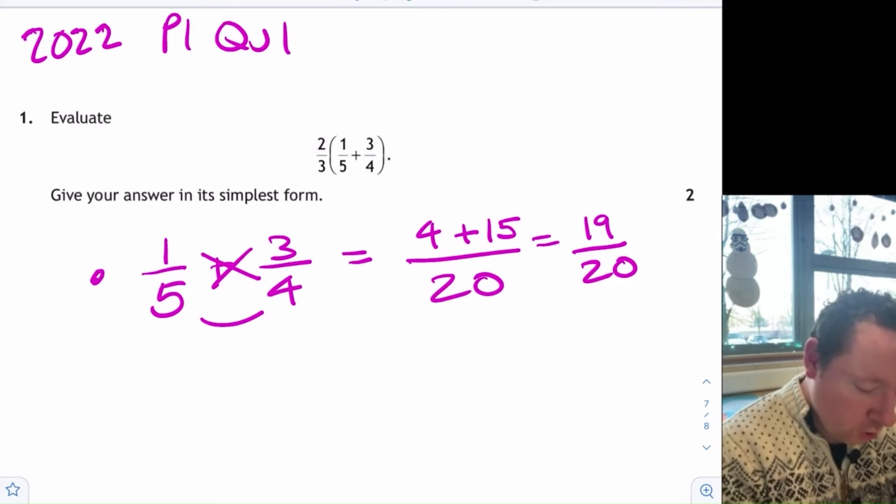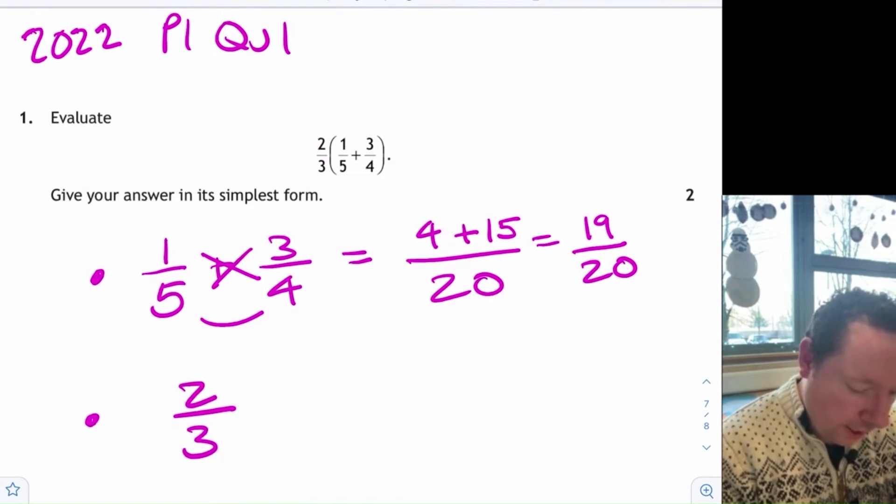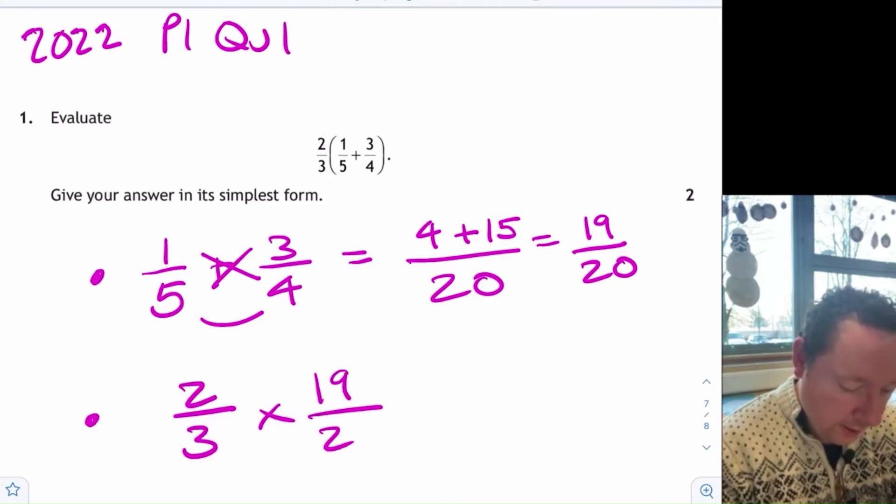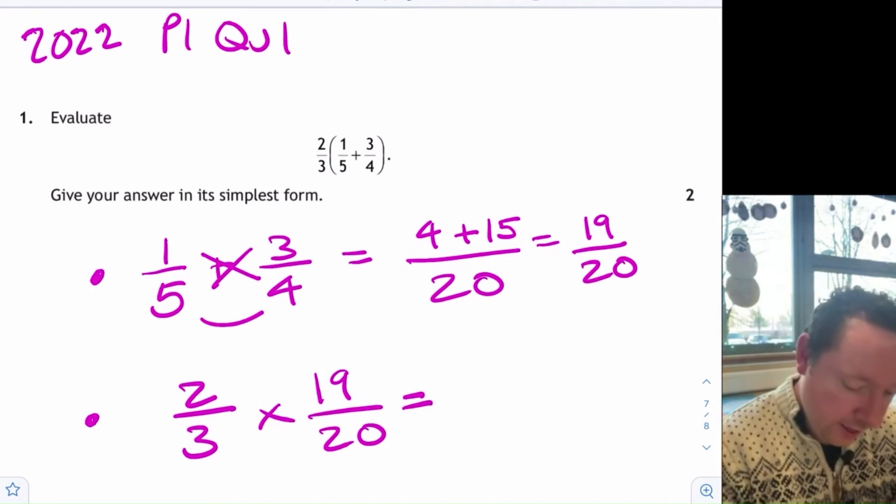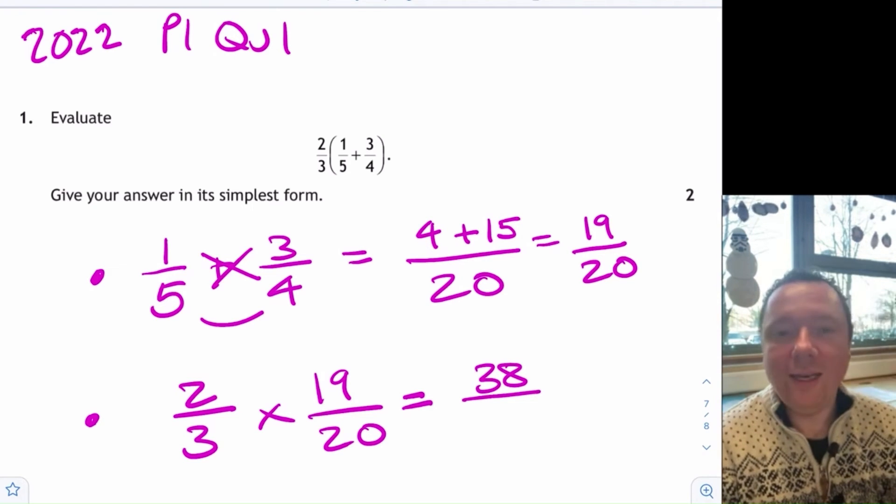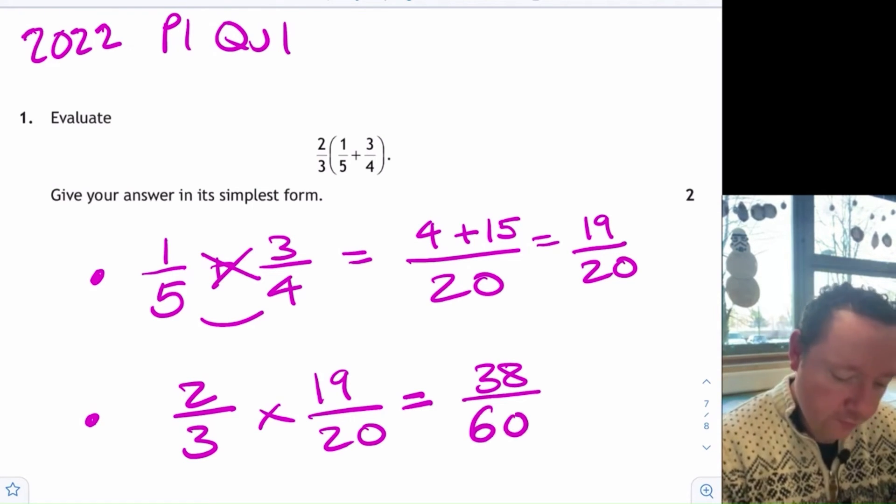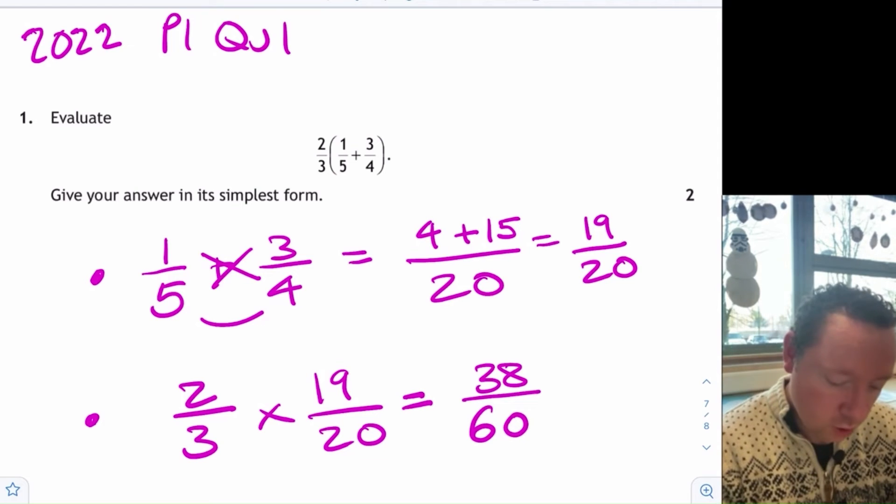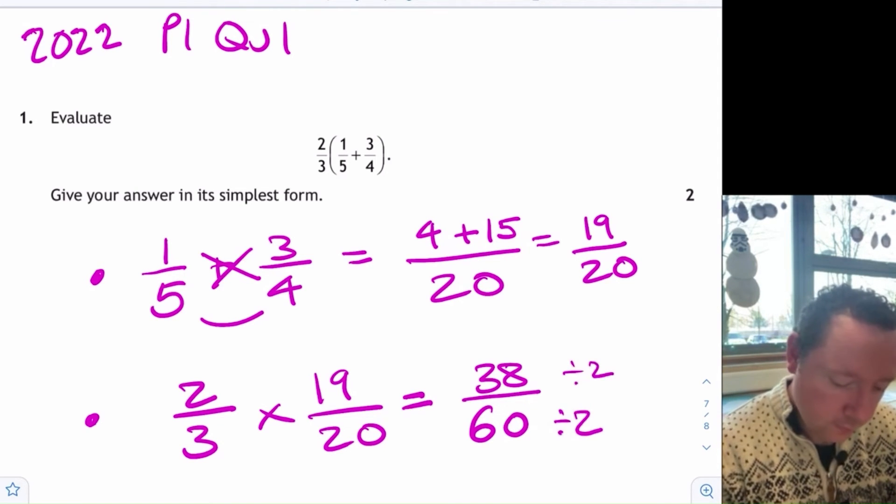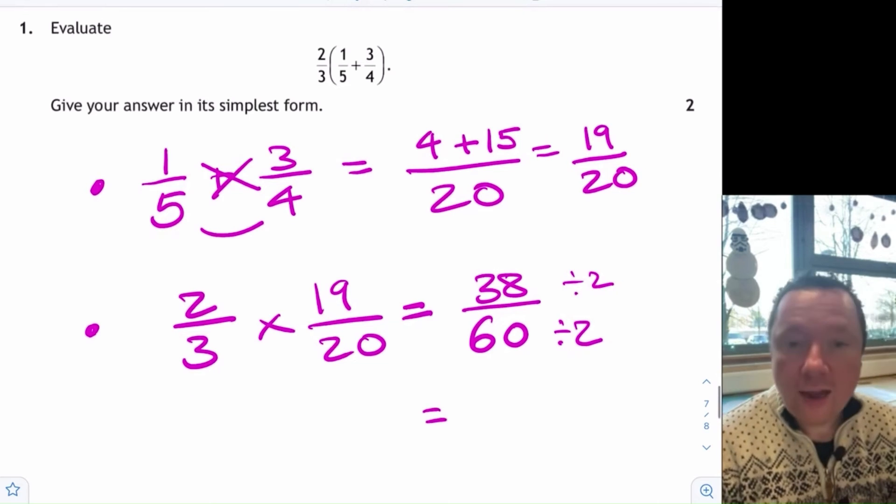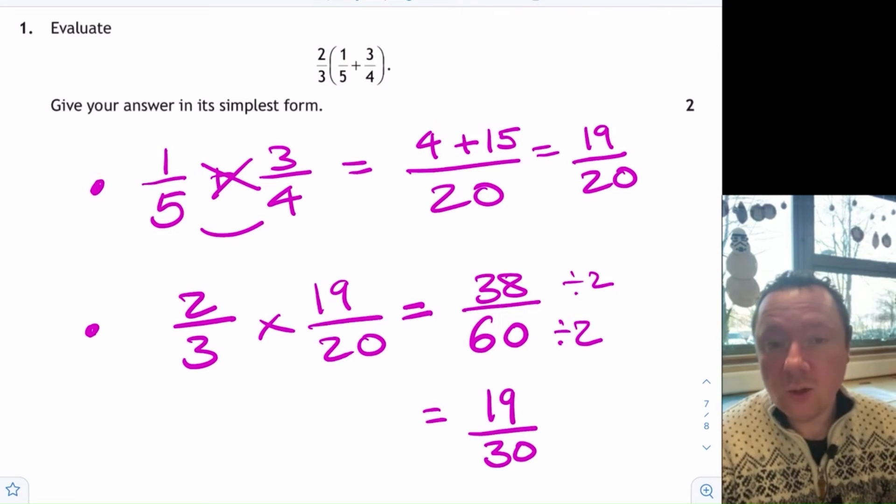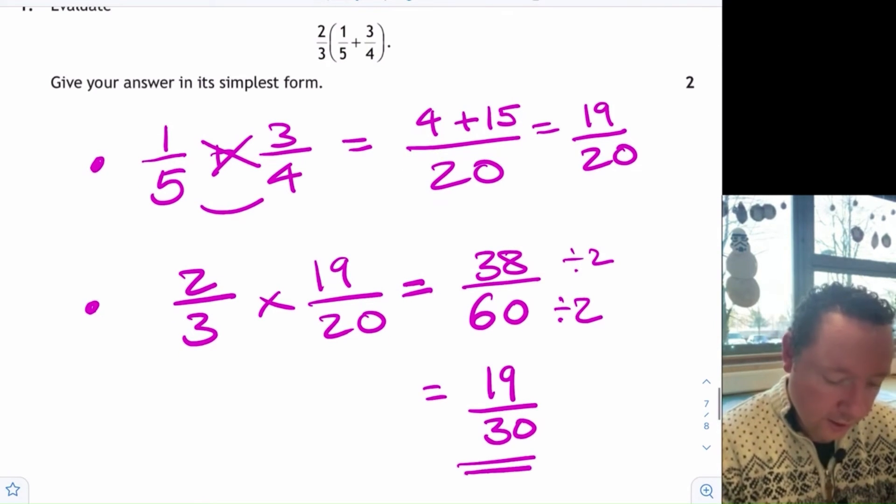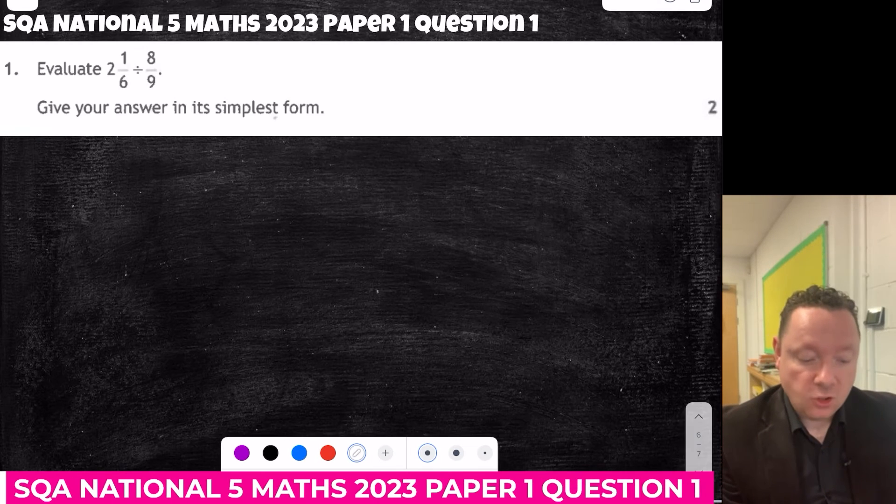So step 2. 2 fifths times 19 over 20. 2 times 19 is 38, 3 times 20 is 60. And they're both even, so I can divide by 2 to simplify. 1 half of 38 is 19, and 1 half of 60 is 30. 19 is a prime number. It doesn't go into 30, so that's me simplified for my final mark.